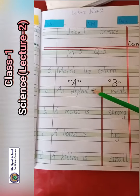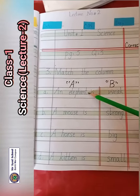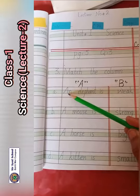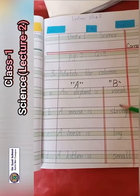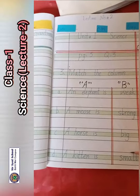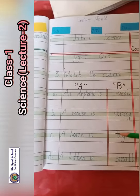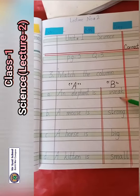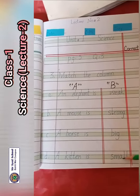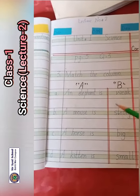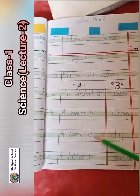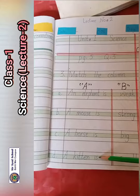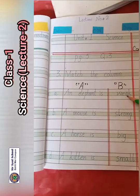We have to match the first sentence from column A. An elephant is — big. Second: a mouse is — small. Third: a horse is — strong. And the fourth one: a kitten is — weak.